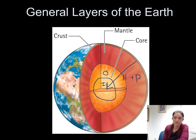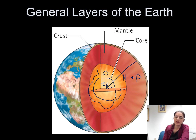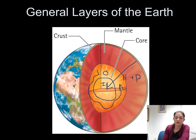If you were under thousands of miles worth of rock, you'd definitely be under a lot of pressure. The inner core has the most pressure and is a solid metal. The outer core, on the other hand, is also under a lot of heat and pressure, but the heat outweighs the pressure — it's so hot that the metals are actually liquid and able to flow. This is actually what gives the earth its magnetic field. So the outer core is liquid metal flowing around the center of the inner core.